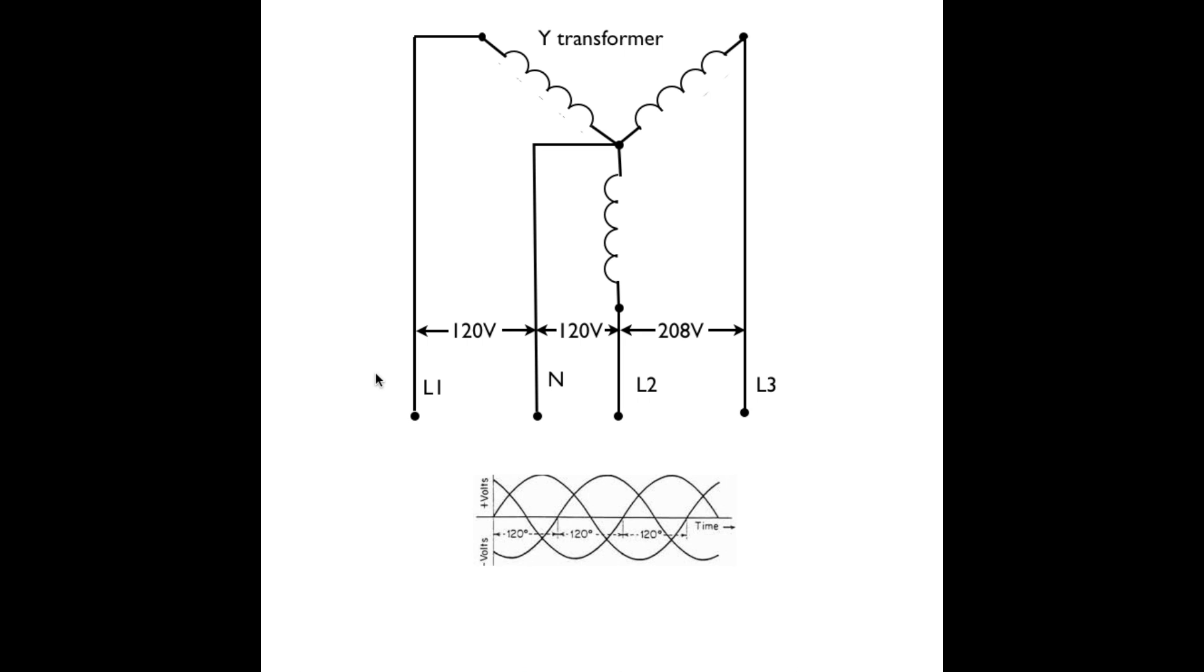So when you are taking power off this transformer, there's four wires. You've got L1 here, you've got L2 here, and you've got L3 here. And what we've done is we've tied in the neutral into the center of all three of these windings.